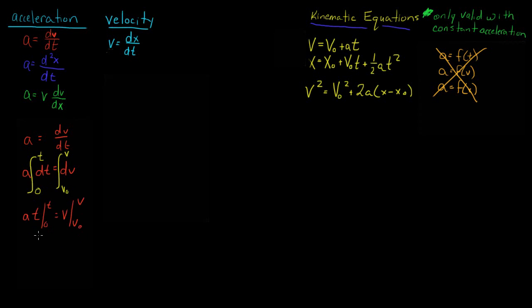Evaluating these integrals gives a·t = v − v₀. Moving v₀ to the other side yields the first kinematic equation: v = v₀ + at.